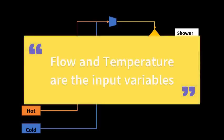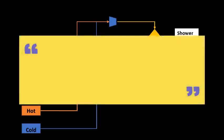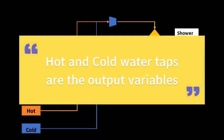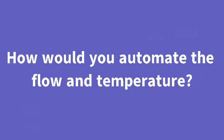This is known as the input or control variables. You have two levers, the hot water tap and the cold water tap. And this is known as output or manipular variables. Let's say you wanted to automatically control the flow and temperature.